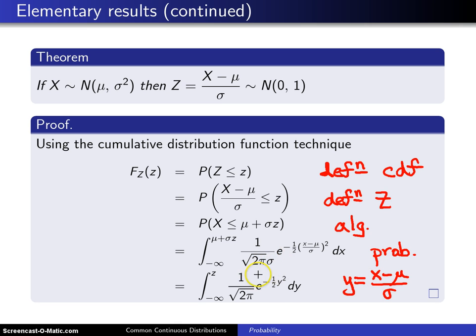this term right here will drop out. And in addition, your limits, instead of going from negative infinity to mu plus sigma z, will go from negative infinity up to z.